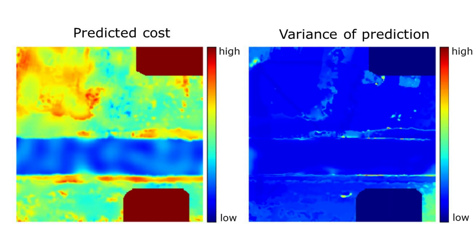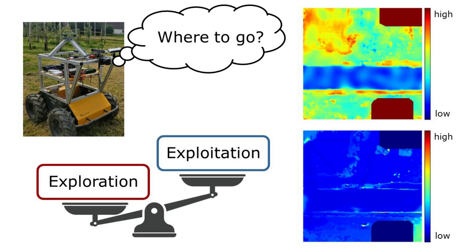We learn a model that predicts the cost of navigating in the environment and the uncertainty of this cost by accounting both for spatial proximity and appearance similarity. We use this model for planning paths that consider the uncertainty of the predicted model to trade off the exploration of unknown promising locations and the exploitation of known low-cost regions for navigation.